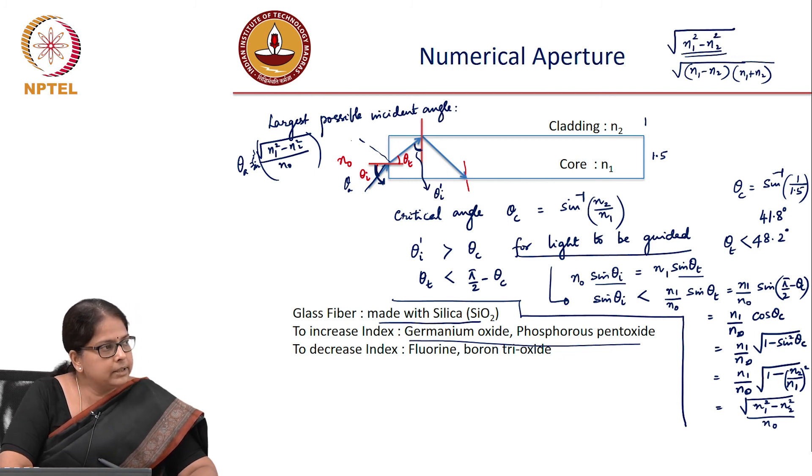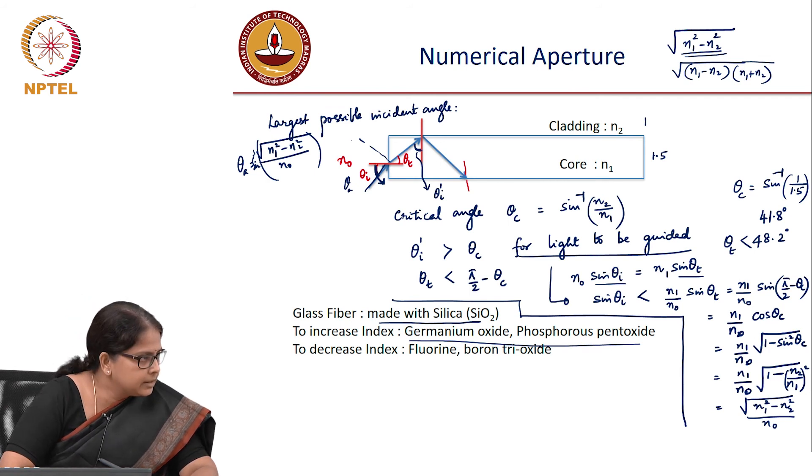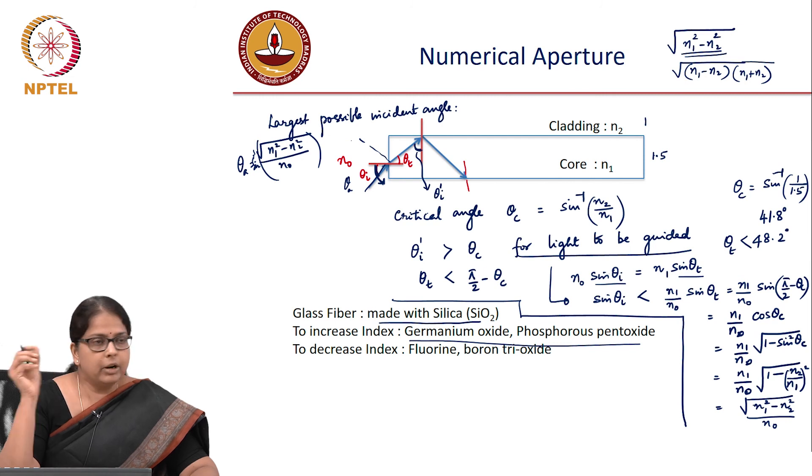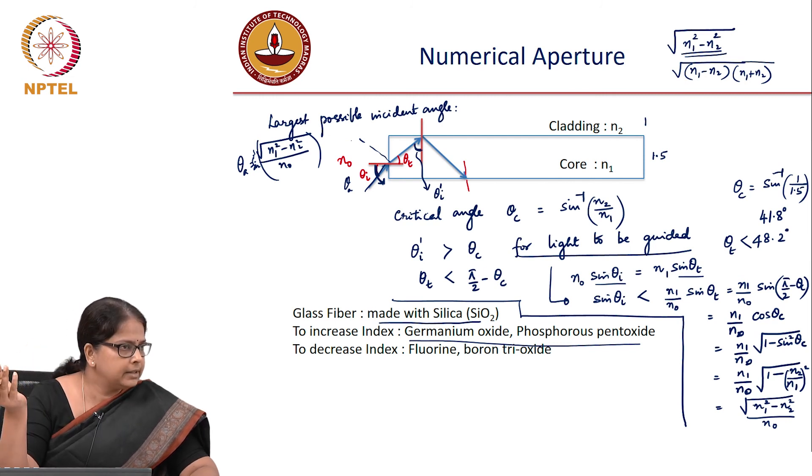It turns out that if you add fluorine or boron trioxide, the refractive index decreases. Typically, you make a fiber by taking silica in the core region and doping it to increase the refractive index. In the cladding region, you decrease the refractive index.